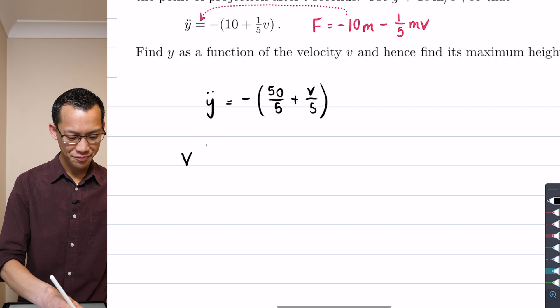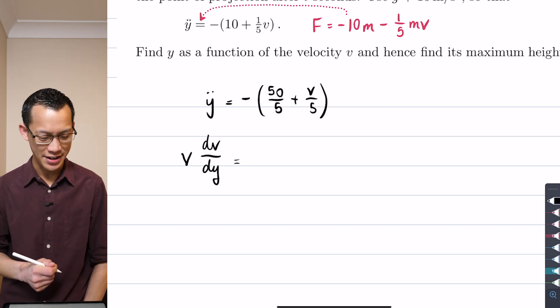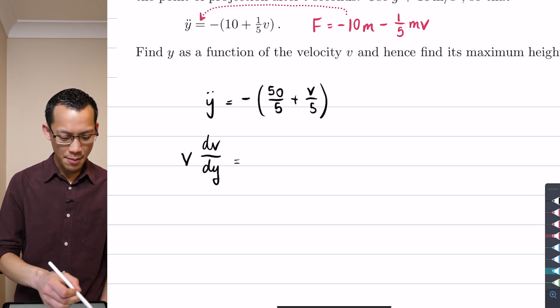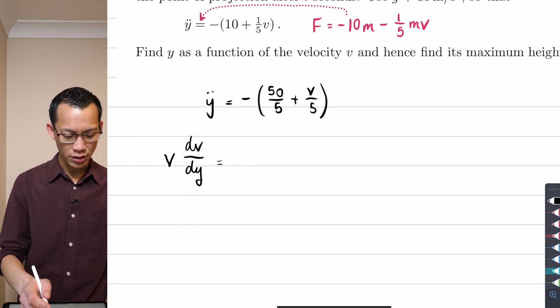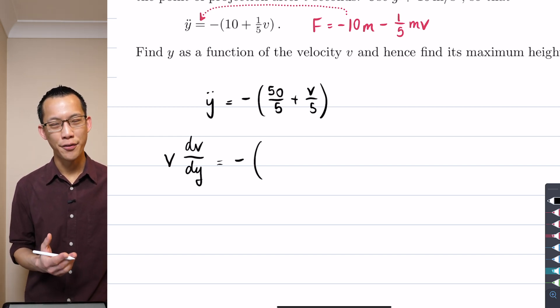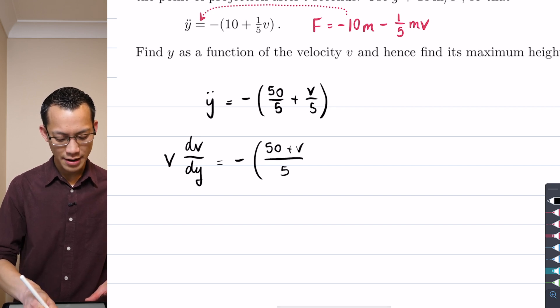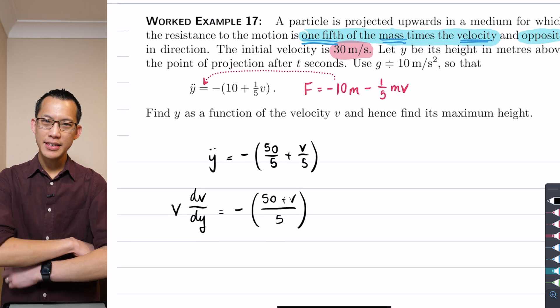If I go v dv on dy, we are used to writing v dv on dx, but this is vertical motion. What am I going to get? Well, let's have a look at the right hand side. I've got that minus sign there and I got everything on the denominator of 5 so I could combine this together. So, I'm going to get 50 plus v, that's all divided by 5. Now, why is this helpful? I want you to anticipate where we're going to go next.